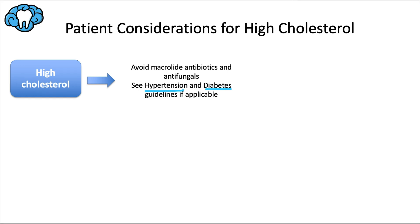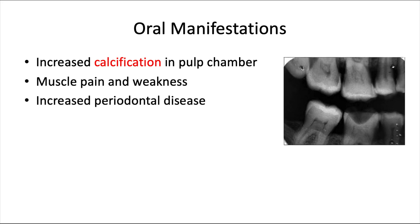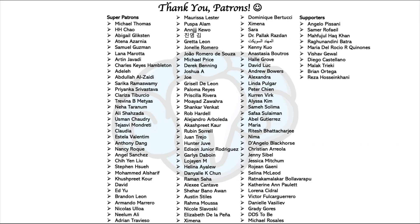Regarding oral manifestations in patients with high cholesterol: there is an increased risk of calcification within the pulp chambers, which can manifest as pulp stones — calcified masses within the pulp tissue, similar to gallstones but in your teeth — making root canal therapy more difficult. The most common side effect of statins is muscle pain, soreness, or weakness, which can affect chewing and breathing if severe enough. Some studies also indicate hyperlipidemia may be associated with periodontal disease, though whether periodontitis causes increased plasma lipids or whether hyperlipidemia is a risk factor for periodontal infection requires further research.